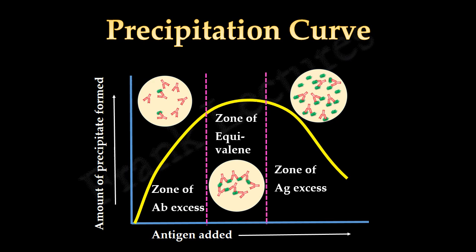In the zone of antigen excess, again no aggregation of antigens occurs and hence no lattice formation takes place.